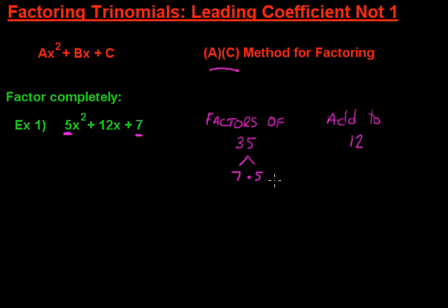Now in reverse FOIL, we would be done right now. We would take these numbers and plug them into our parentheses. But with the AC method, it's not quite that simple. We're going to take this middle term and simply replace it with the values we found. What you see is what you get, but in this case, for the middle term.